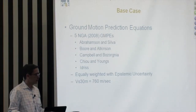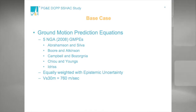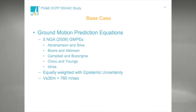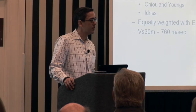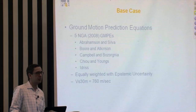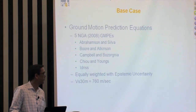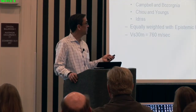Going along with what Katie had mentioned, we have to first define a base case. For our base case, we've got the five 2008 NGA West 1 models. They're equally weighted, and as Katie mentioned, we have this epistemic uncertainty model applied to them depending upon the fault source type — whether you have the large strike-slip sources or the reverse faulting sources. We've done everything for VS30 of 760 meters per second for these sensitivity plots.